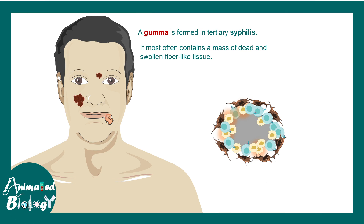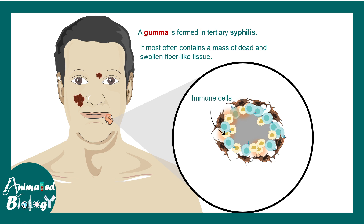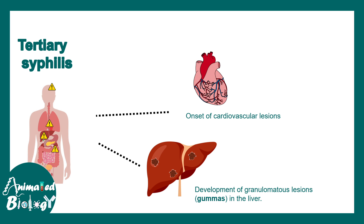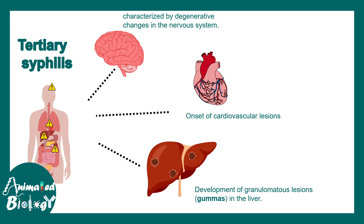Later, one can see gumma formation on the skin. Gumma is basically a mass of dead, swollen, fiber-like tissue containing different types of immune cells and fibroblasts, with a necrotic center. The tertiary stage of syphilis is very difficult — gumma develops in different regions including the liver, and it can lead to cardiovascular lesions and neurological complications. The survival chances are low in this stage.